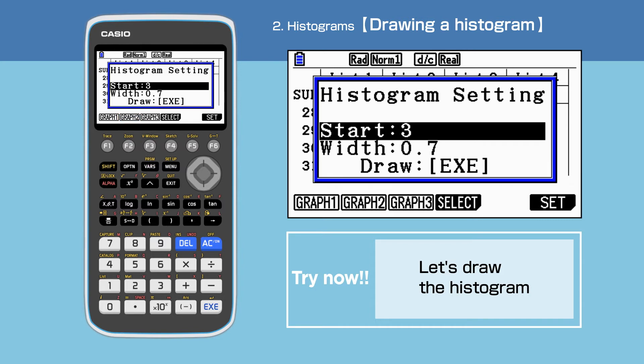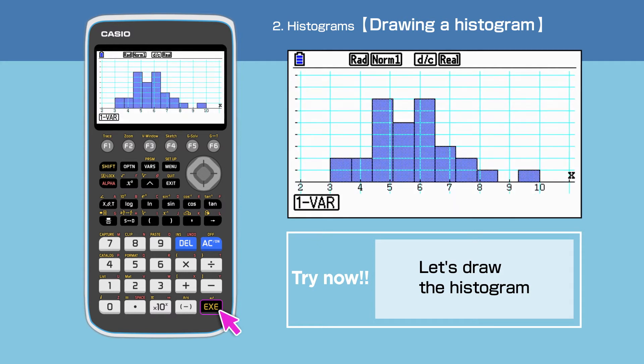The histogram setting is open and we have the option to change the starting value and the width of the histogram. Press execute to draw. We have successfully drawn the histogram for the battery life for Company A.